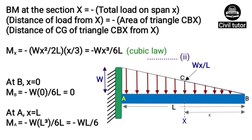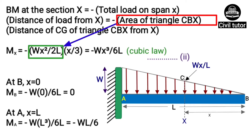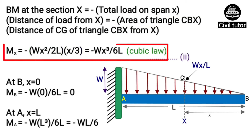So bending moment at section x equals minus (Wx²/2L) × (x/3) = −Wx³/6L, which forms a cubic law. Let's mark this as equation two.